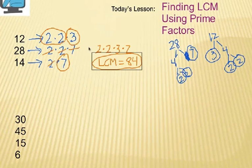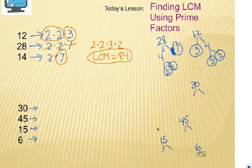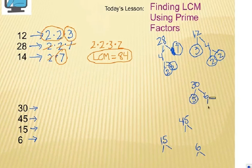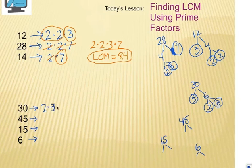Now let's look at our next example: 30, 45, 15, and 6. We've got to find the prime factors of every number. We start with 30, and that's 5 times 6. But 6 is actually 2 times 3. We're looking just for the prime factor numbers when we're done. Write it in order — that's 2 times 3 times 5.